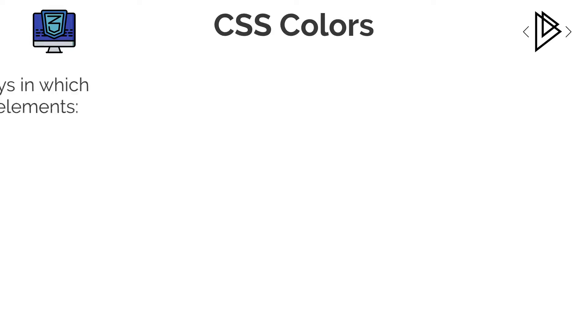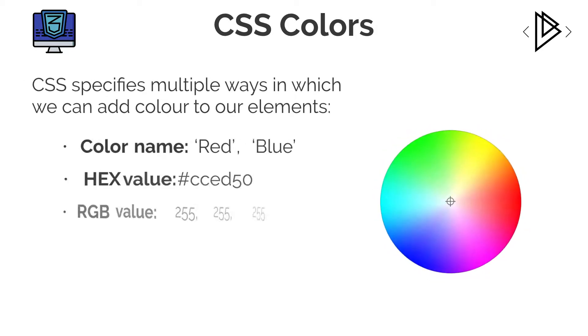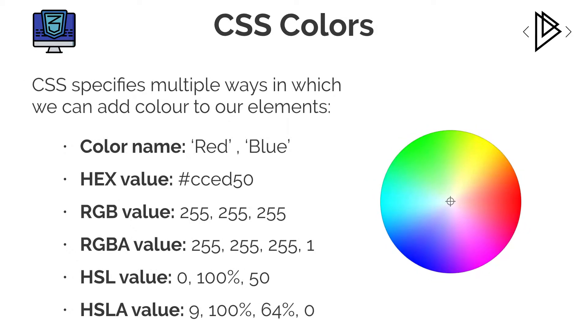Hey guys, it's Amit and welcome back to DevDreamer. In this lesson we're looking at CSS colors. CSS specifies multiple ways in which we can add color to our elements — by color name such as red or blue, by hex value, RGB, RGBA, HSL, and HSLA. If you have no idea what any of these mean, don't worry because we're looking at them in detail right now.